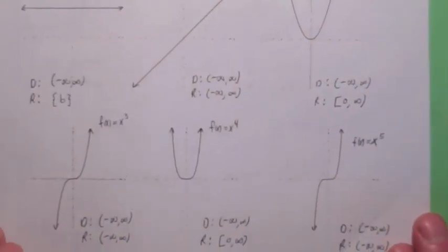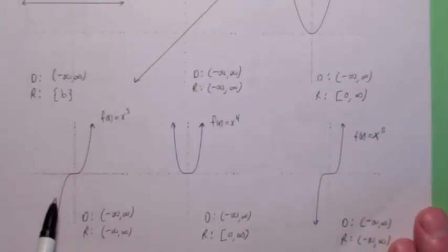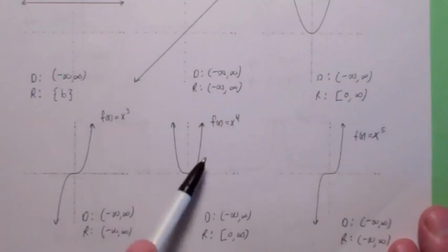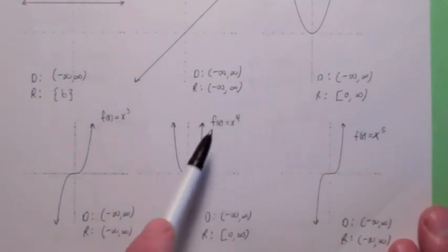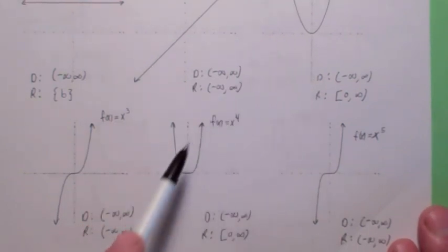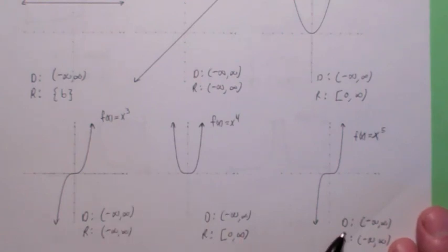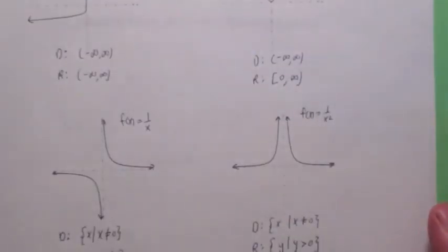Now, x cubed, I think we've seen that at some point. x cubed looks like this. And the domain and range are both negative infinity to infinity. x to the 4th looks kind of like x squared. It's a little bit steeper in places, but it's the same basic shape. And the domain and range are the same as x to the 4th. Now, look at the difference between x to the 5th and x to the 3rd. You see how they look very similar? Again, x to the 5th is a little steeper with the same domain and range as x to the 3rd.